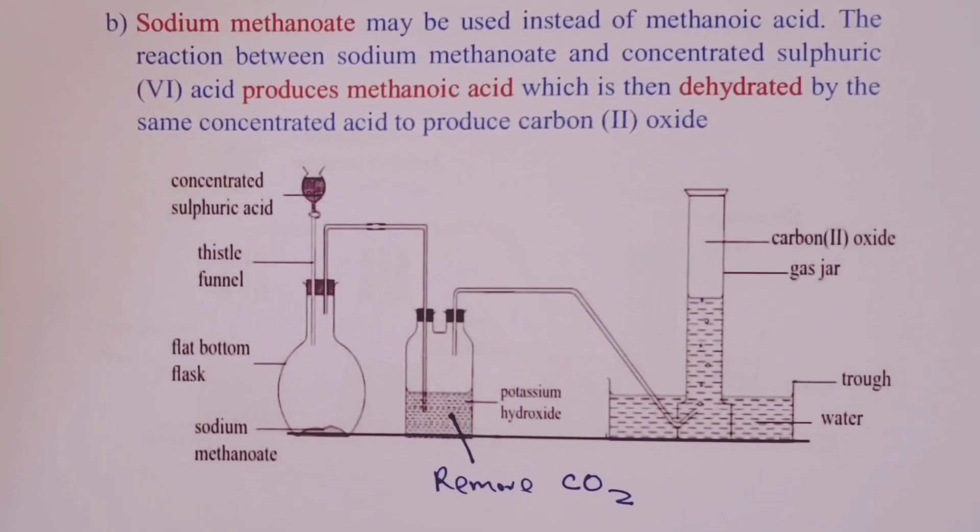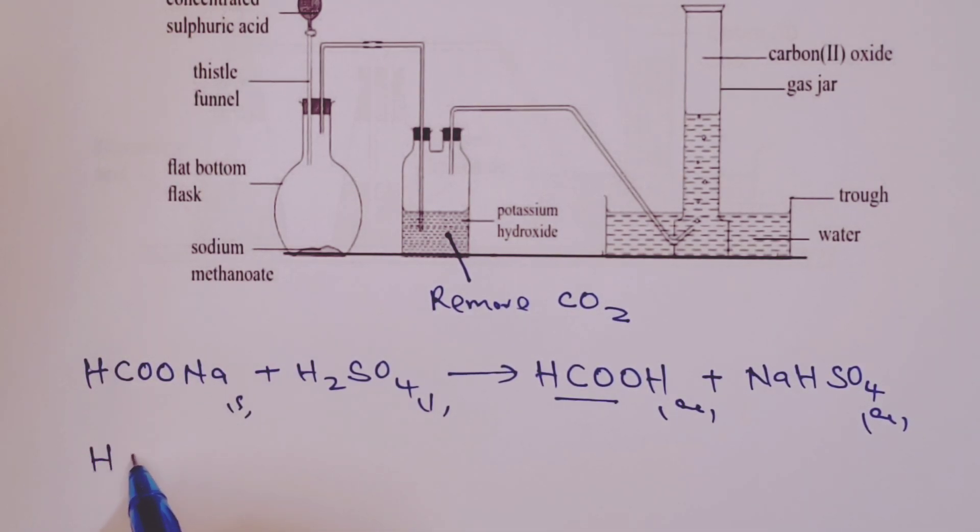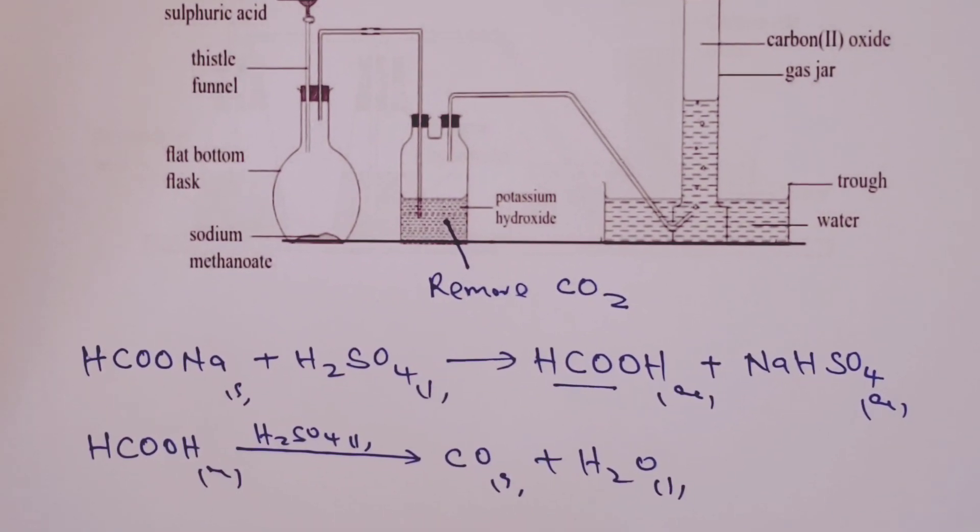Now for the equation this is going to be a two-step reaction. So in the first case our sodium methanoate with that formula is reacting with concentrated sulfuric (VI) acid. We shall produce methanoic acid. This time the state will be aqueous and we shall have sodium hydrogen sulfate being produced as well. Now the moment we form our methanoic acid then our concentrated sulfuric (VI) acid will dehydrate it and we end up forming our gas carbon (II) oxide and water. So that becomes our two-step reaction for method 2.